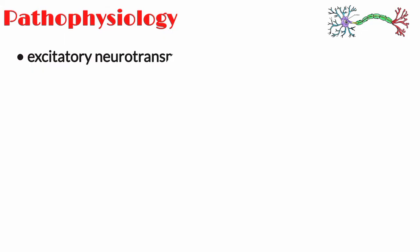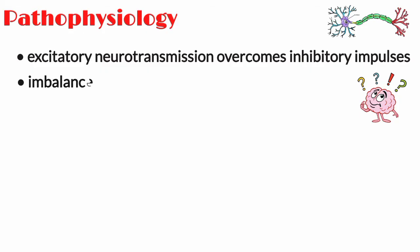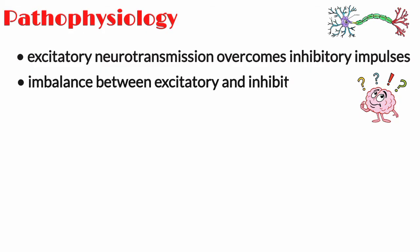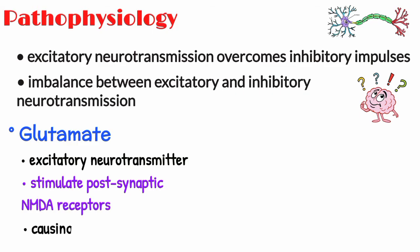Now let's talk about the pathophysiology of status epilepticus. Seizures occur when excitatory neurotransmission overcomes inhibitory impulses in one or more brain regions. While the exact cellular mechanisms are unknown, seizure initiation appears to be caused by an imbalance between excitatory and inhibitory neurotransmission. Glutamate is the primary excitatory neurotransmitter, stimulating postsynaptic NMDA receptors and causing neuronal depolarization.